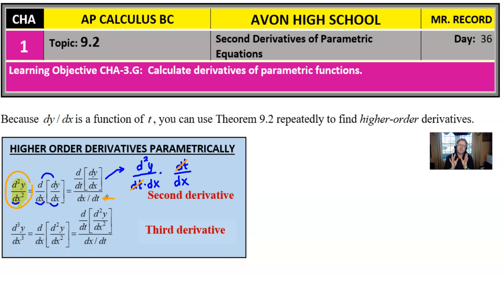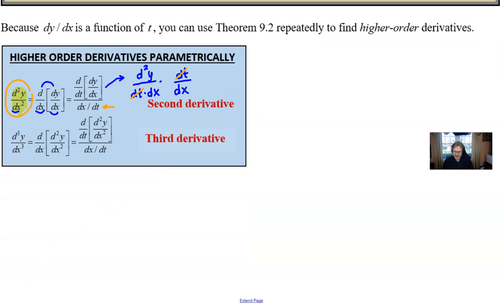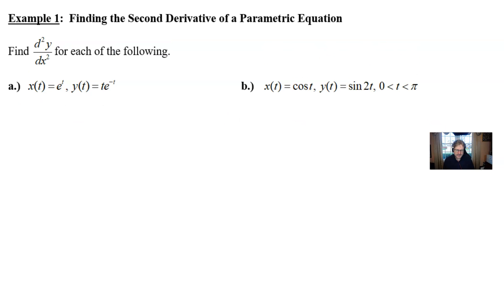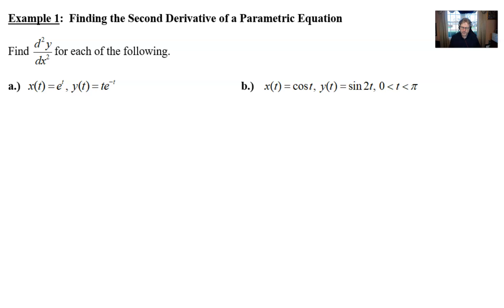The key point is that you can't just take the second derivative from your first derivative and call it a day — you have to divide by dx/dt to finish the trick. This continues for third and fourth derivatives as well; we always divide by dx/dt to make a higher-order derivative happen. Let's look at an example to see what I mean.